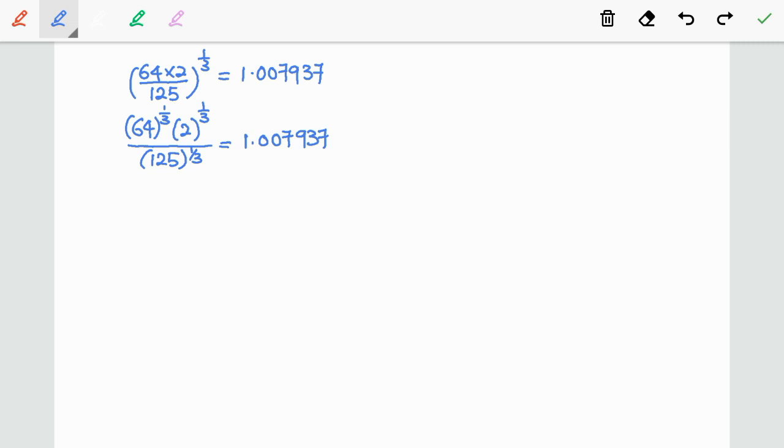So 64^(1/3) is 4, and then rewrite 2^(1/3) as cube root of 2 divided by 125^(1/3) which is 5. Now to eliminate 4/5 we multiply both sides by 5/4.